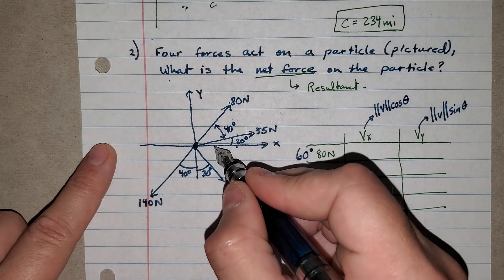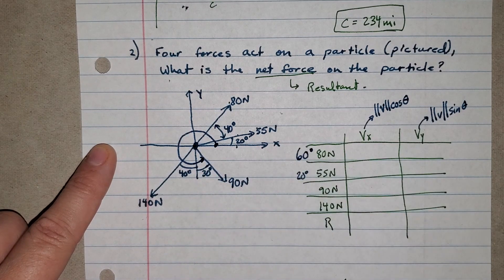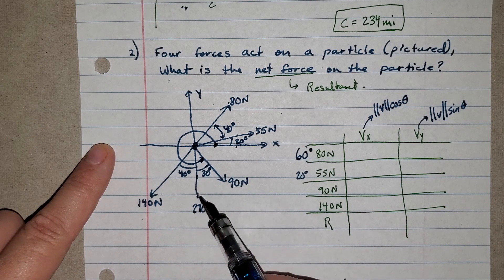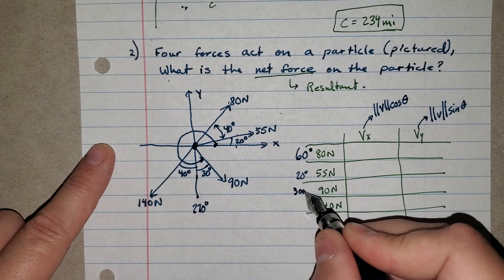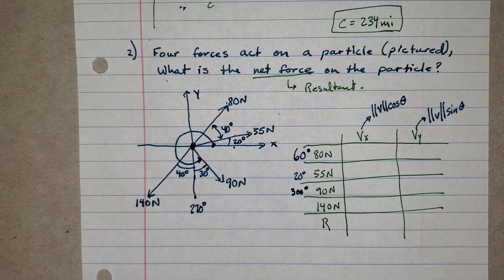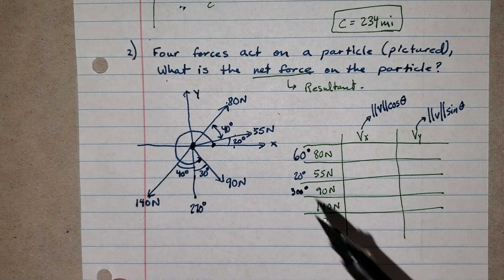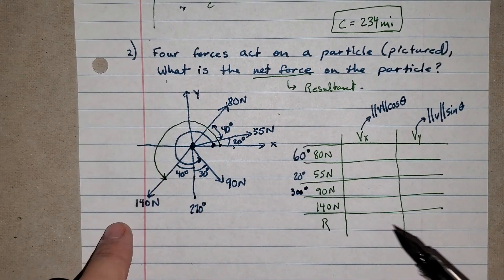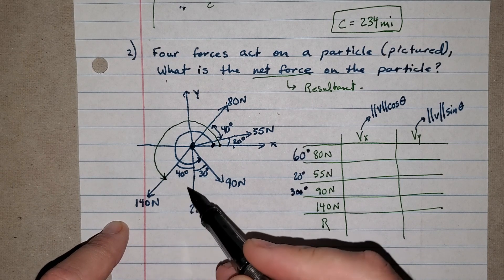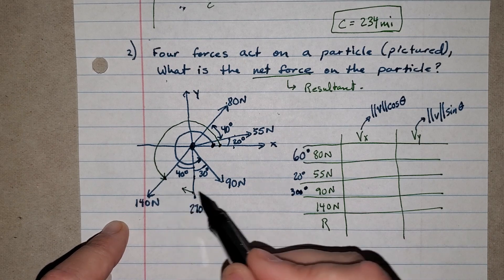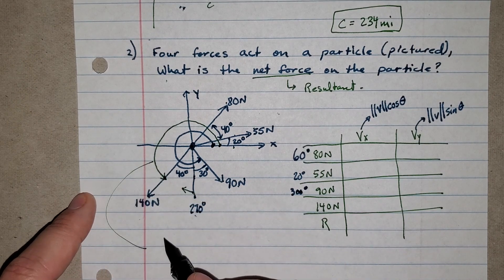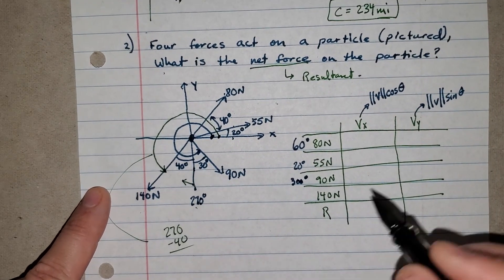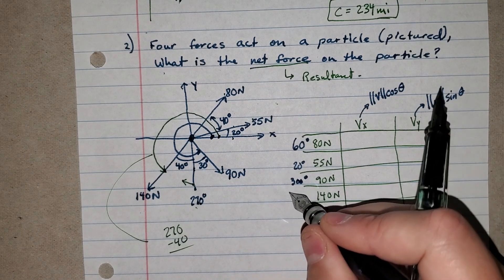For the 90-newton vector, we need to go all the way around. The negative y-axis is 270 degrees, and from 270 we go an additional 30 degrees, giving 300 degrees. For the 140-newton vector, there's a 40-degree angle near the negative y-axis. Starting from 270 and going back 40 degrees gives 270 minus 40 equals 230 degrees. As a check: 300 is between 270 and 360 — that makes sense. And 230 is between 180 and 270 — that also makes sense.